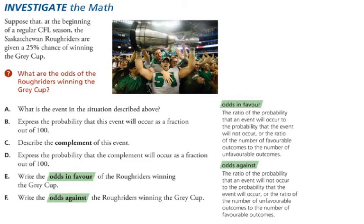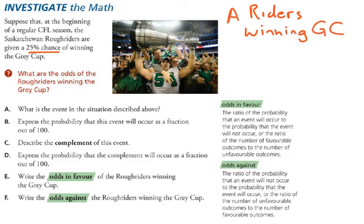To apply this, let's suppose at the beginning of a CFL season the Saskatchewan Rough Riders are given a 25% chance of winning the Grey Cup. In part A, what is the event? We have to be specific here — this is the Riders winning the Grey Cup. In part B, the probability that this event will occur as a fraction out of 100: since we're given a percent, and percents are always out of 100, the probability of the Riders winning would be 25 out of 100, meaning if 100 seasons were played, in 25 of them the Riders would win the Grey Cup.